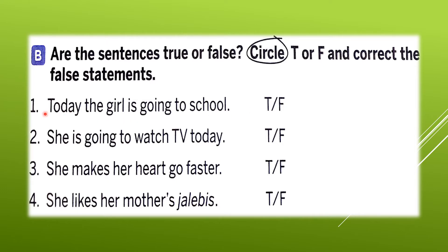Number one: Today the girl is going to school. No, the answer is false. Let us circle false. Now we have to correct the sentence. The correct sentence will be: Today the girl is not going to school.